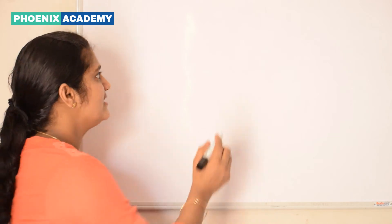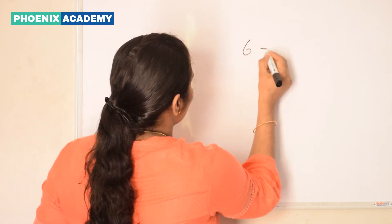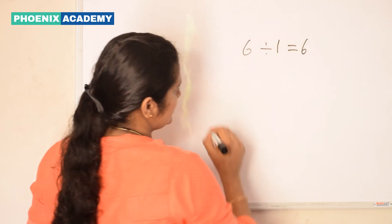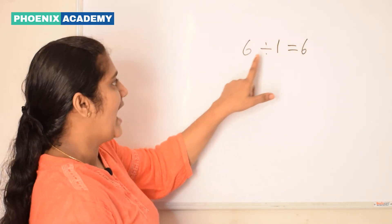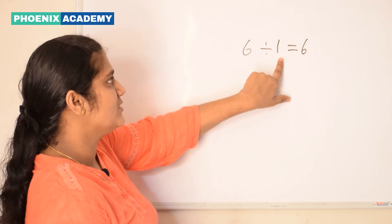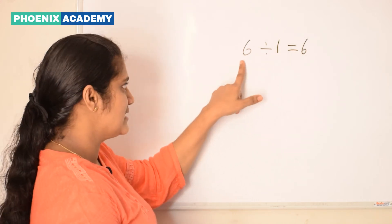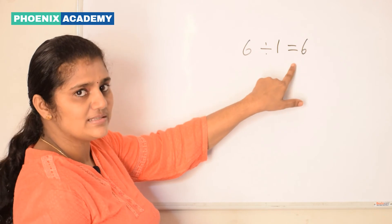Suppose if I am giving 6 balls to only one kid, one kid is having all the 6 balls. That is, 6 divided by 1 equals 6. 6 balls I am giving to one kid, so this kid is having 6 balls. 6 divided by 1 equals 6.